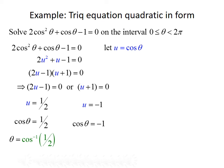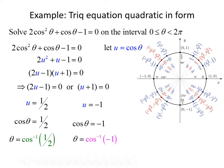Taking the inverse cosine of both sides, we use the unit circle to evaluate. Both 1/2 and −1 are common values. For cosine equal to 1/2, the x-coordinate equals 1/2 at π/3 and 5π/3. For the inverse cosine of negative 1, the x-value equals −1 at π. So our solution set is θ equals π/3, 5π/3, and π.